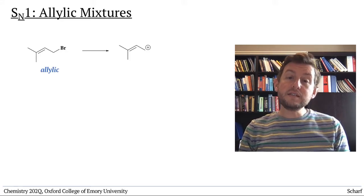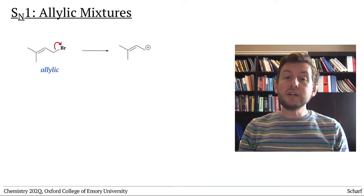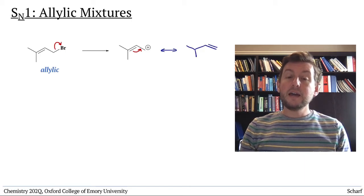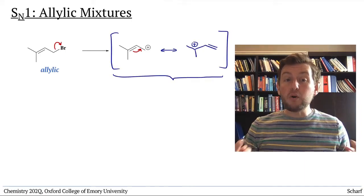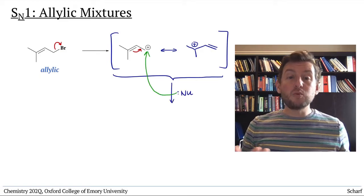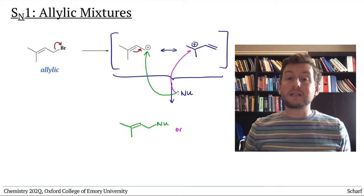For instance, if this allylic bromide just leaves, the resulting carbocation has two resonance structures. An incoming nucleophile is attracted to both positively charged sites, and depending on which site it actually collides with, there are two possible products.